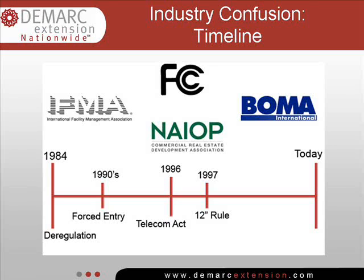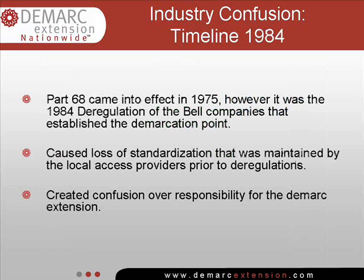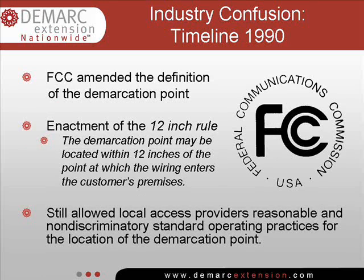Over a period of many years, the industry has dealt with deregulations and a lack of set standards affecting the DMARC Extension and ultimately the end user's connection to a business-essential telecommunications network. The 1984 deregulation of the telecommunication industry established the demarcation point, but triggered a loss of standardization and much confusion over responsibility for the DMARC Extension. In August of 1990, the FCC amended the definition of the demarcation point, partially due to industry confusion over the location within multi-unit premises. This amendment ensures it would be near the point where the cabling entered the customer's premises.